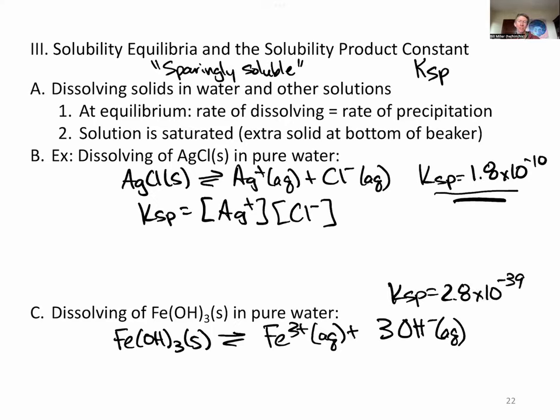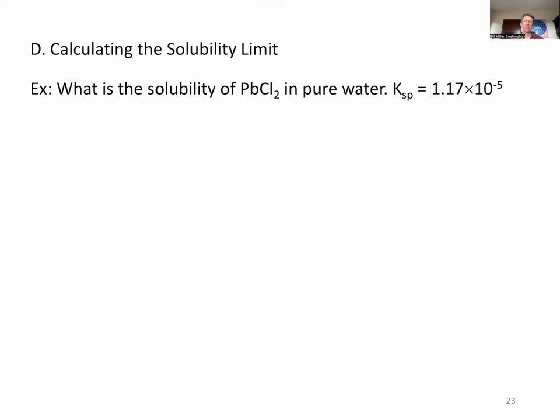If we were to write the Ksp expression for this, still the solid doesn't show up, but the iron 3 does and the hydroxide does, and it's cubed. So all the same rules as before. Some people like to think about this as over 1 because there's nothing that's aqueous or a gas on the reactant side. Either way works for me.